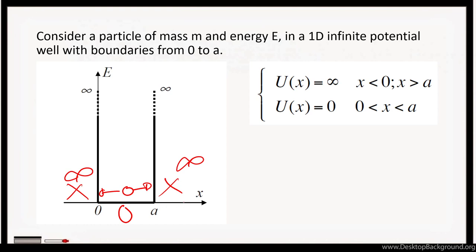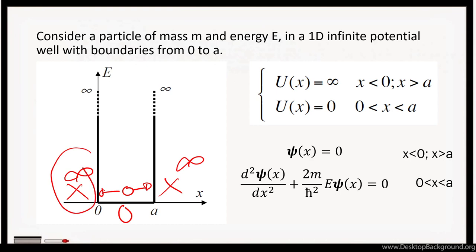The wave function outside of our potential well in these regions, since the potential is infinite, will be equal to 0. Since the particle cannot exist there, we can say that the wave function of that particle will be equal to 0. No need for us to even consider the Schrödinger equation anymore.